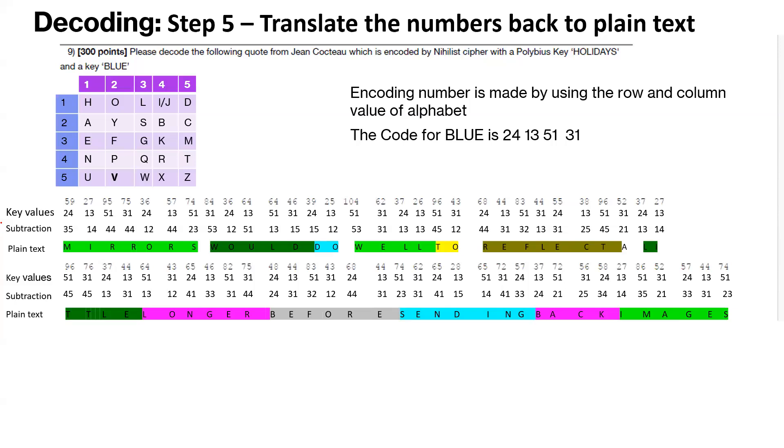So to kind of recap, what we did was we got a nihilistic cipher. We had a polybius key and we had a key value. And we just wrote down the key values against each of the encoded value, numeric value here.